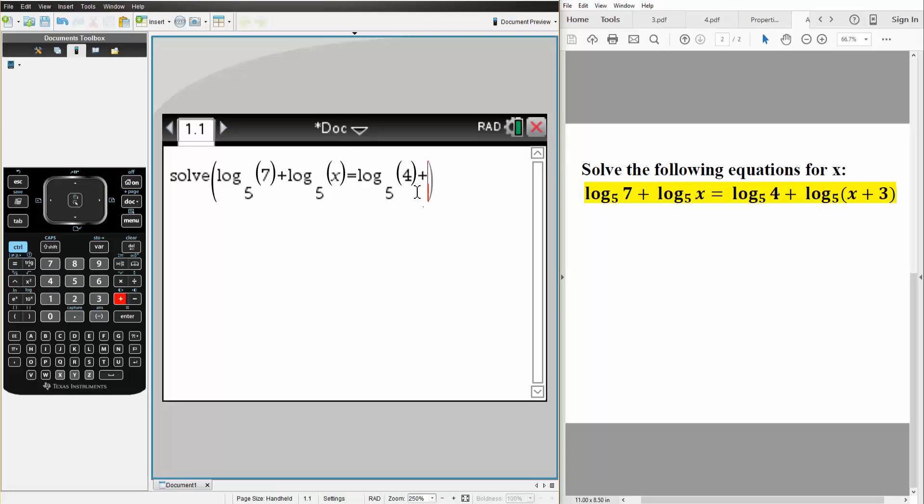Plus one more, Ctrl-Log, 5, parentheses, x plus 3, and the important step is comma x.